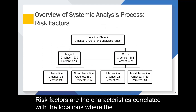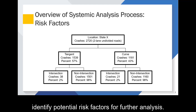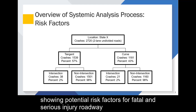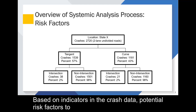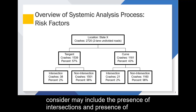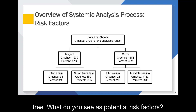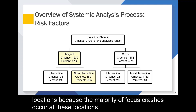Risk factors are the characteristics correlated with the locations where the target crash types occurred. Crash trees help you identify potential risk factors for further analysis. This crash tree diagram continues with the previous example showing potential risk factors for fatal and serious injury roadway departure crashes on two-lane undivided roads. Based on indicators in the crash data, potential risk factors to consider may include the presence of intersections and presence of horizontal curves. In this example, risk factors appear to be tangent and non-intersection locations because the majority of focus crashes occur at these locations.